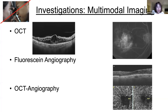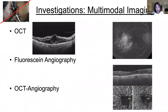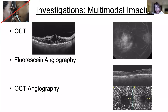Investigations are now all about multimodal imaging. We use a variety of different imaging techniques — OCT is our absolute key investigation that we cannot do without. Fluorescein angiography is used less but still has a valuable place. OCT angiography is still in its infancy in terms of guiding treatments, but with artificial intelligence platforms this is a huge area with a lot of data coming.